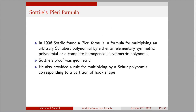Sottile's Pieri formula: in 1996, Sottile published a paper with really two formulas — a formula for multiplying an arbitrary Schubert polynomial by an elementary symmetric polynomial, and a formula for multiplying by a complete homogeneous symmetric polynomial. Sottile's proof is geometric, and in the same paper he provided a rule for multiplying an arbitrary Schubert polynomial by a Schubert polynomial corresponding to a partition of hook shape.